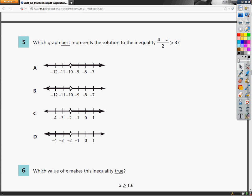This is the 7th grade TCAP practice test, the math section. This is question number 5. The question says, which graph best represents the solution to the inequality 4 minus a over 2 is greater than 3?